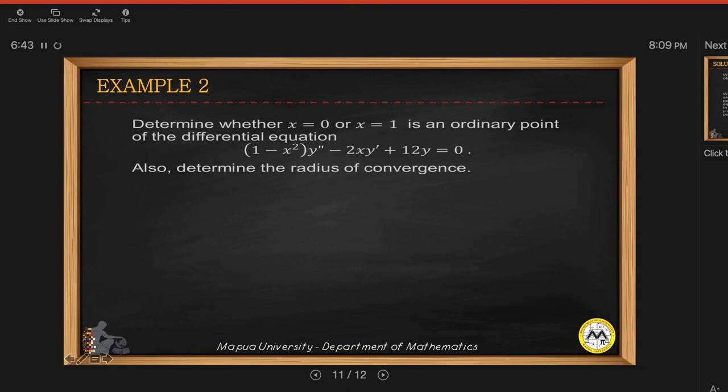We multiply, okay, we want this to be equal to 1, the coefficient. That should be in the standard form. So we multiply this by 1 over 1 minus x squared. Okay, so you get y double prime here minus 2x over 1 minus x squared and then your y prime plus 12 over 1 minus x squared y equals 0.